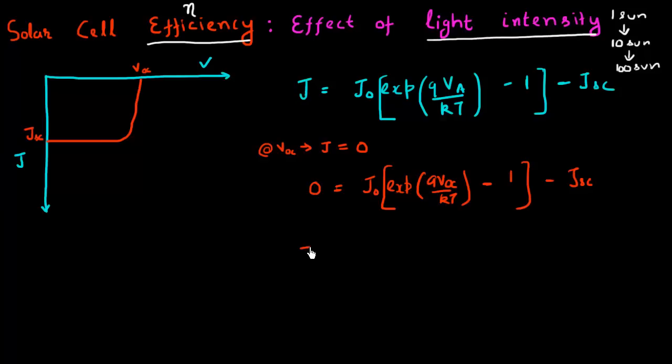And then I get a formula for open circuit voltage to be equal to KT by Q, natural log of JSC plus J naught divided by J naught. So I can simplify this and write it, approximate it equal to KT by Q, natural log of JSC divided by J naught.